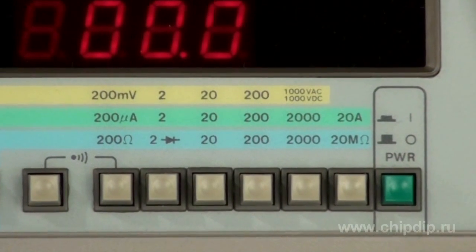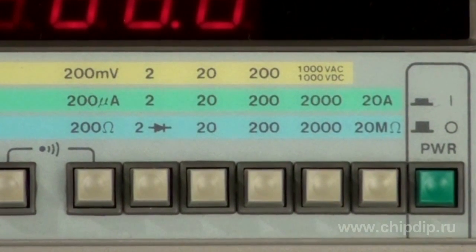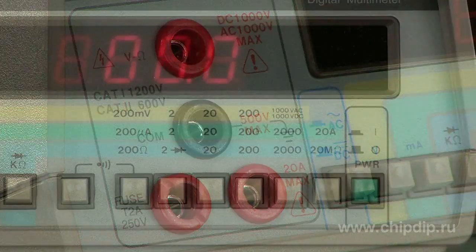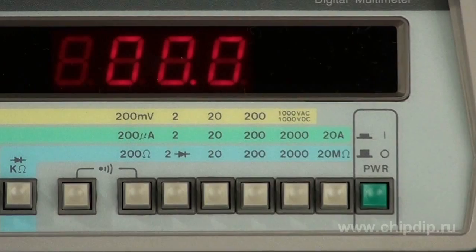The measurement results are displayed on a LED screen with a resolution of 3.5. To measure voltage, we insert the measuring wires into the matching jacks and push the measurement mode control switch.